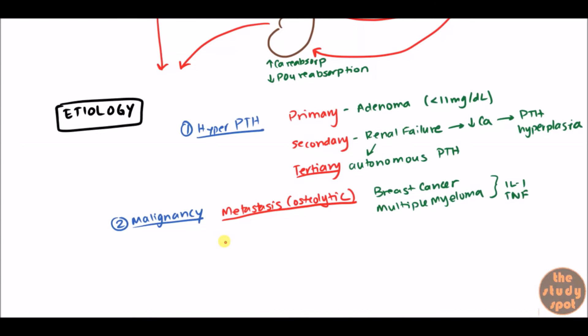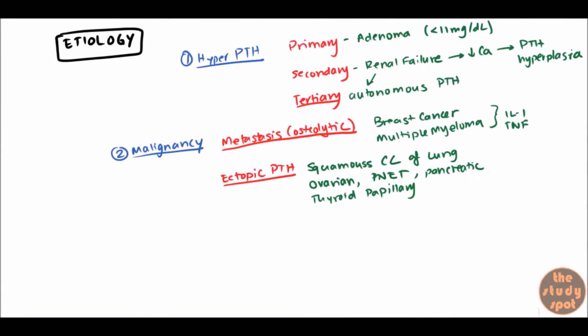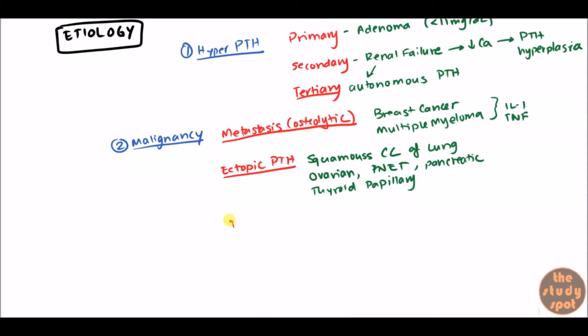Okay, the other mechanism of tumors to release higher calcium is going to be ectopic parathyroid hormone production. Okay, so which tumors do this? Squamous cell carcinoma of the lungs can definitely release PTH causing hypercalcemia. Ovarian cancers can do this. Primitive neuroendocrine tumors can do this. Pancreatic cancers can cause ectopic parathyroid hormone. And also thyroid papillary carcinoma as well. They also create ectopic PTH which eventually leads to hypercalcemia.